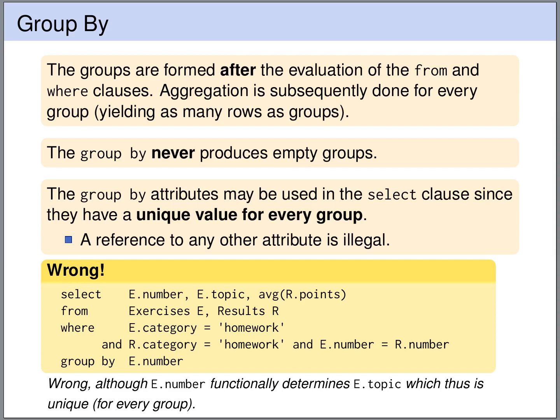Let's have a look at an example. Here we are grouping by the NUMBER of the homework exercise — we are only looking at homework exercises and grouping them by the NUMBER. In the SELECT clause we are allowed to use E.NUMBER because this attribute has a unique value for each group. However, the reference to the topic of the homework here is illegal — this is not the GROUP BY attribute and it is also not an aggregation function.